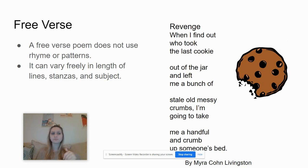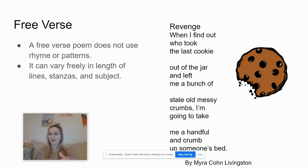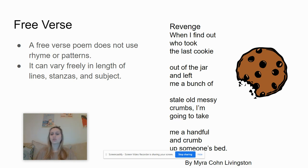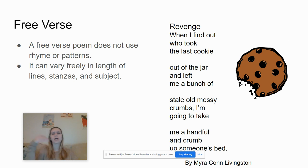The next is a free verse. This poem does not have to rhyme or have any patterns. It can vary freely in length, lines, stanzas, and subjects. This one is by Myra Cohen Livingston, called 'Revenge': 'When I found out who took the last cookie out of the jar and left me a bunch of stale, old, messy crumbs, I'm going to take me a handful and crumb up someone's bed.' You can see there's no real pattern in it — it just kind of goes along.